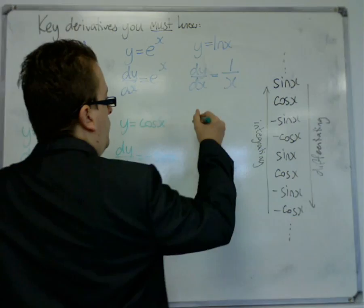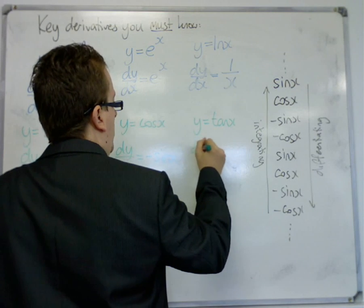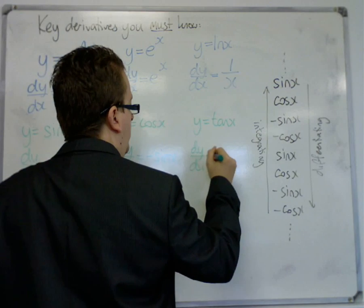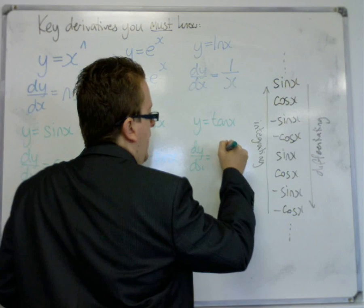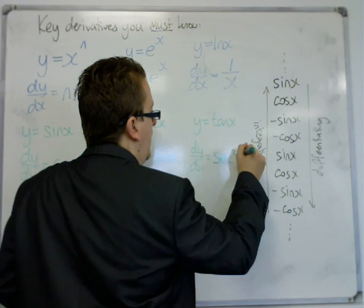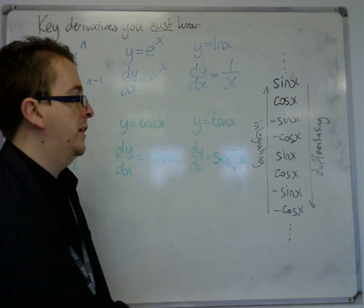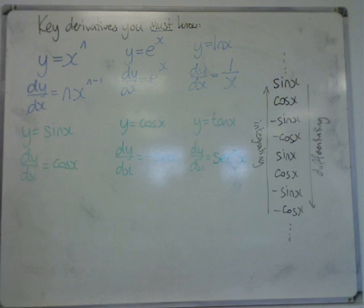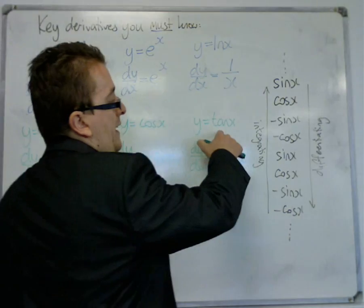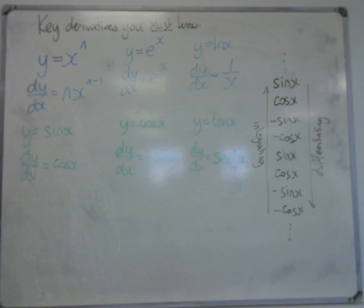We also have y equals tan x. Now, you can show as to why this is true, that the first derivative of tan x is sec squared x, using the quotient rule, which I'm going to be making a video on later. You convert tan x to sin x over cos x, and then differentiate it using the quotient rule.